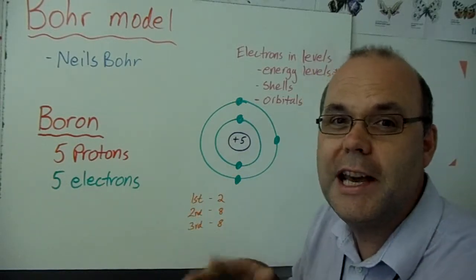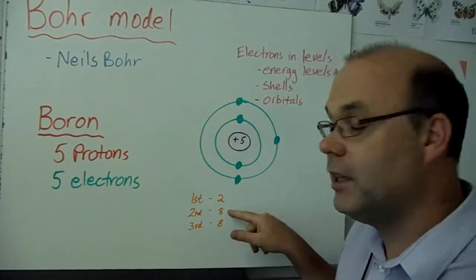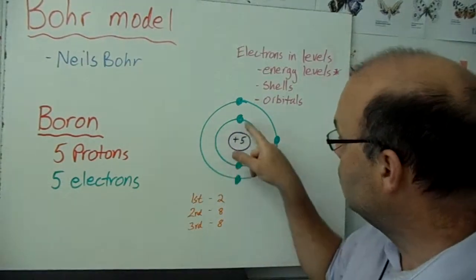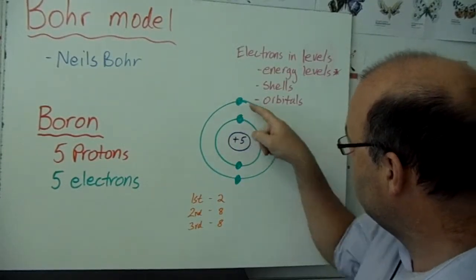So they do the next best thing. They go in the second energy level. You can fit eight in there. Now, boron has five. So one, two. That leaves three. Three, four, five. One, two, three, four, five.